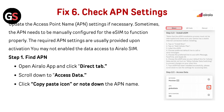Check APN settings. Update the access point name settings if necessary — sometimes the APN needs to be manually configured for the eSIM to function properly. These required APN settings are usually provided upon activation. Open the AirLo app, click the Direct tab, scroll down to access data, and click the copy/paste icon or note down the APN name.